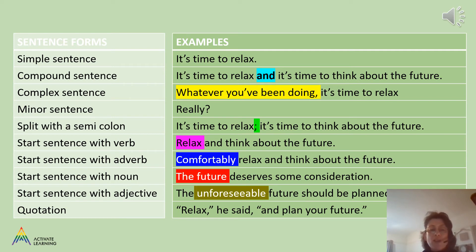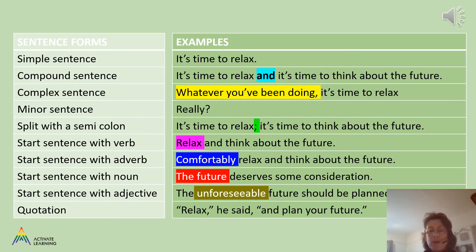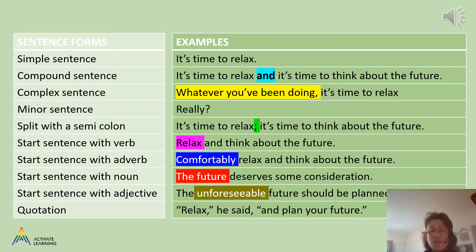Split with a semicolon: 'It's time to relax; it's time to think about the future.' Note that you cannot do that with a comma. Start your sentence with a verb: 'Relax and think about the future.' Start your sentence with an adverb: 'Comfortably relax and think about the future.' Start your sentence with a noun: 'The future deserves some consideration.' Start your sentence with an adjective: 'The unforeseeable future should be planned.' Use a quotation: 'Relax,' he said, 'and plan your future.'